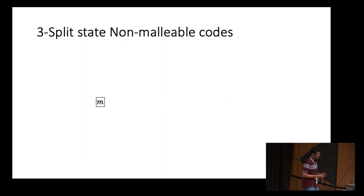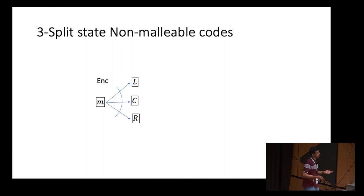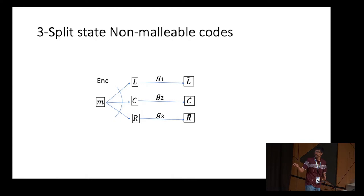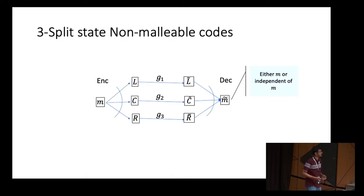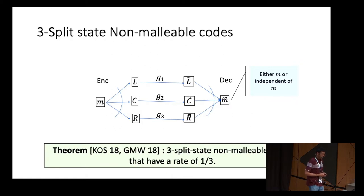Let's recall what a three-split-state non-malleable code is. There is a message M and an encoding procedure that produces three states L, C, and R, with a corresponding decoding procedure that reconstructs M from those three states. The non-malleability property requires that if we tamper with these three states independently, the reconstructed tampered message is either the original message or something independent of it. Note that unlike non-malleable secret sharing, non-malleable codes need not preserve the secrecy property — one state could give information about the message. Independent works of Kannukurthy et al. and Gupta et al. give explicit three-split-state non-malleable codes with rate one-third, which we use as a building block.